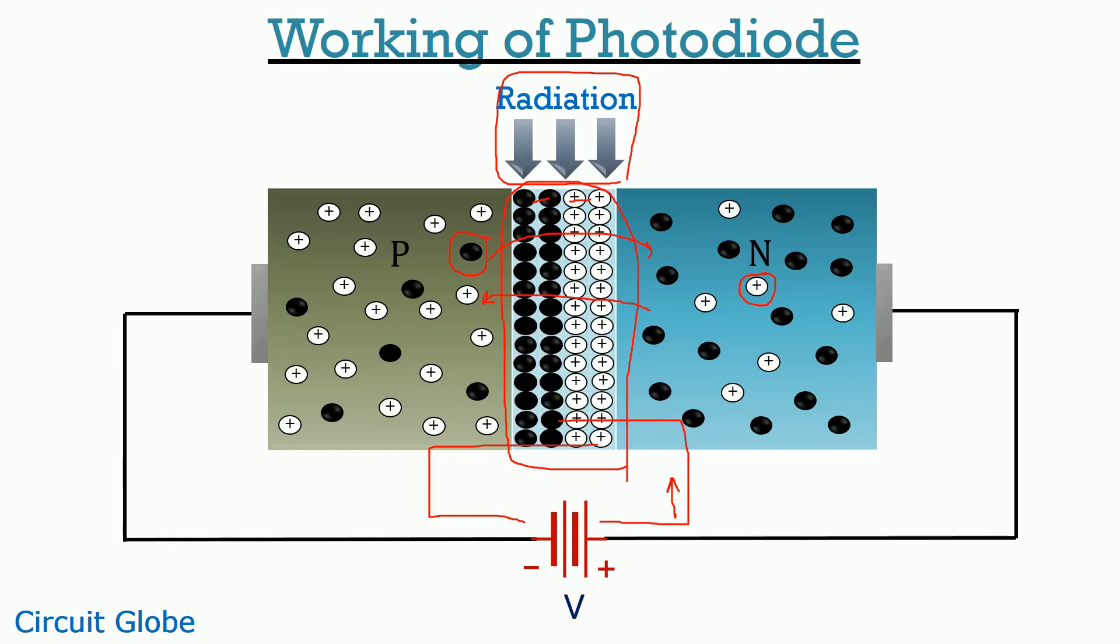Due to this movement or we can say due to this whole process that happens over here, the flow of current takes place. And with the increase in the intensity of radiation, the current through the device also increases. More simply, we can say that the current through the device is directly proportional to the intensity of light.